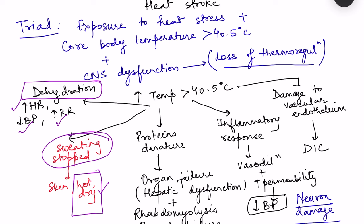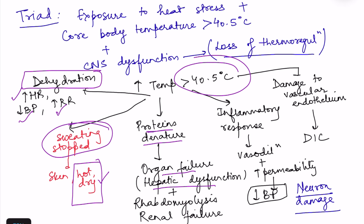Organ failure begins, with the liver being especially susceptible since hepatocytes are very heat sensitive, causing hepatic dysfunction. Muscle proteins also denature, leading to rhabdomyolysis, which in turn causes renal failure. Lab investigations show increased creatine kinase, oliguria, microscopic hematuria, and myoglobinuria due to the release of myoglobin from broken-down muscle.